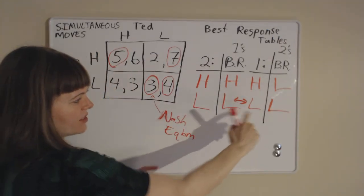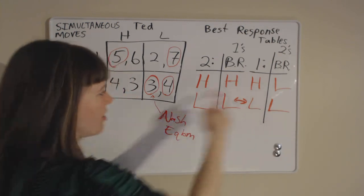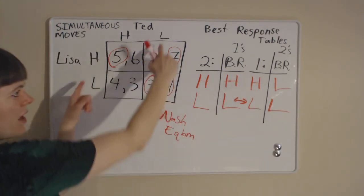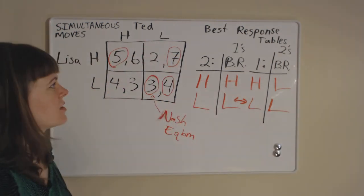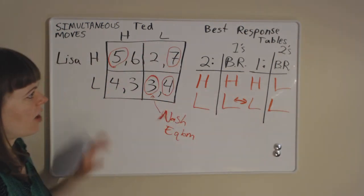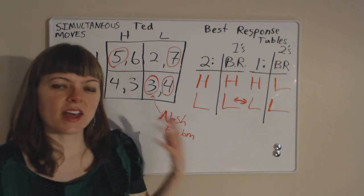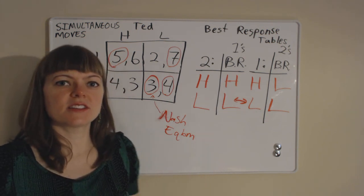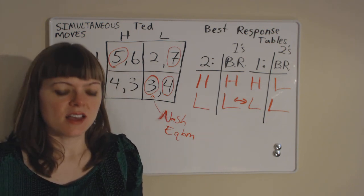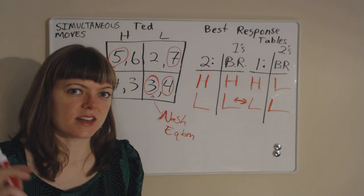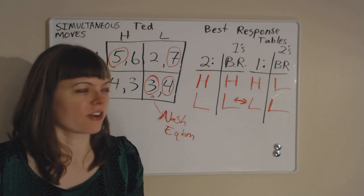We can check it — we see the low-low box has our Nash equilibrium, which is also what we found using the best response tables. So that's how you solve simultaneous moves games to find the Nash equilibrium in game theory.